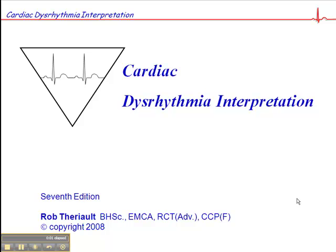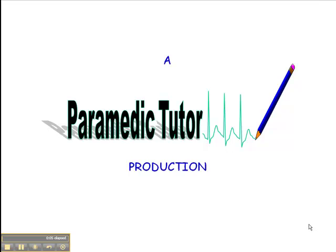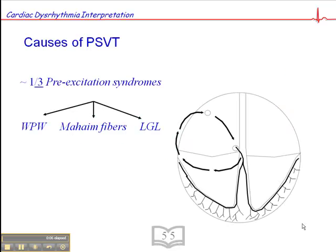We're on page 55 of your Cardiac Rhythm Interpretation book, and I want to continue talking about the etiology of paroxysmal supraventricular tachycardia. In the last presentation, I talked about AV nodal reentry being the most common cause of PSVT, accounting for about two-thirds of the causes.